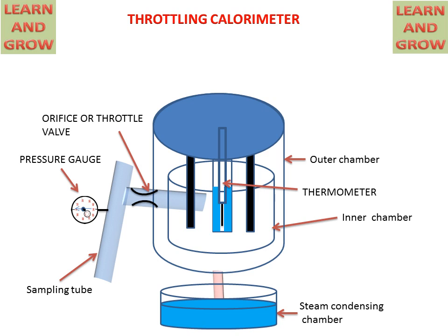Now we see the working of throttling calorimeter. When steam will come through the sampling tube, it will pass through this throttle valve and become superheated. And this superheated steam will go to the inner chamber of the throttling calorimeter. In the throttling calorimeter, it will go in the downward direction and then upward direction, and it will reach to the outer chamber.